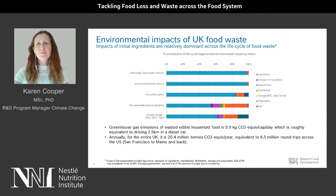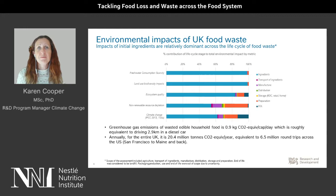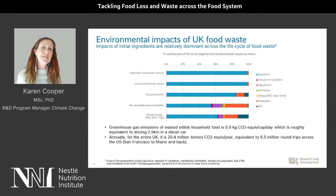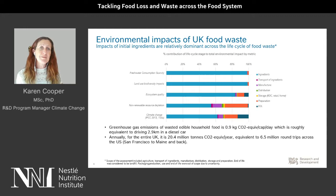Switching to the environmental side of household waste, you can see the ingredients in blue and the agricultural impacts of those ingredients are the most dominant across all five environmental indicators. We currently use five: climate change, non-renewable resource depletion — things that are non-renewable such as fossil fuels and some metals — ecosystem quality and land use biodiversity, and fresh water. Ingredients dominated across all five, though there is some difference in the preparation of foods in the home, which relates more to energy use for climate change and non-renewable resource depletion.